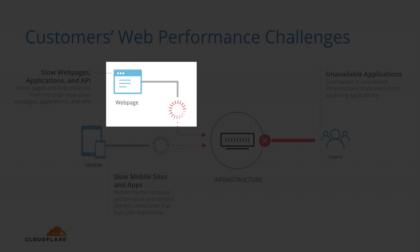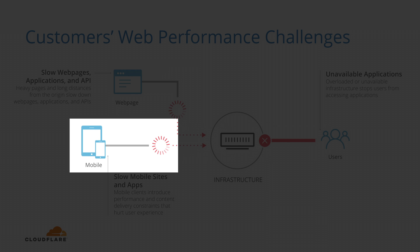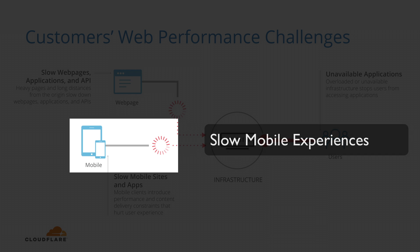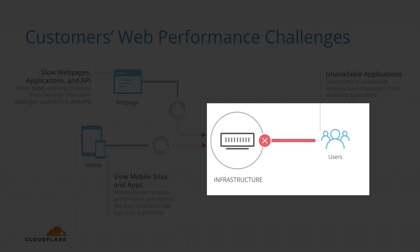Slow web pages, applications, or APIs due to heavier content or longer distances to the origin. Slow mobile experiences for both sites accessed over mobile or native mobile apps. And unavailable applications through overloaded infrastructure, congested networks, or unexpected hard-to-troubleshoot issues with the application itself.